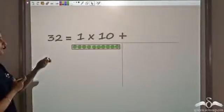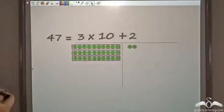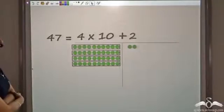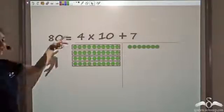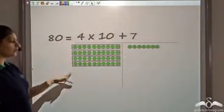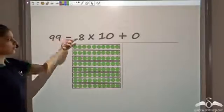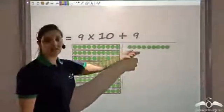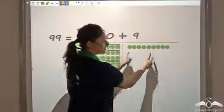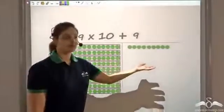For 32 you would need 3 tens and 2 ones. Similarly for 47 you would need 4 tens and 7 ones. For 80 you would need 8 tens and 0 ones. You can keep making numbers up to 99, which needs 9 tens and 9 ones. This is the maximum: we can have only 9 ones and only 9 tens.